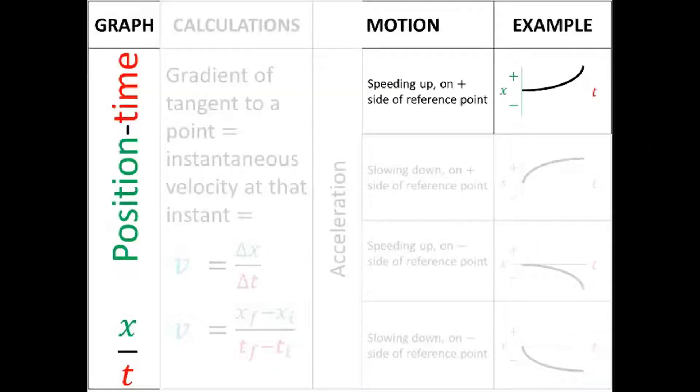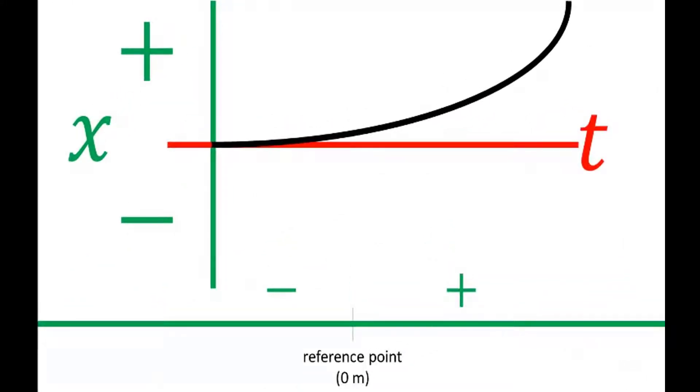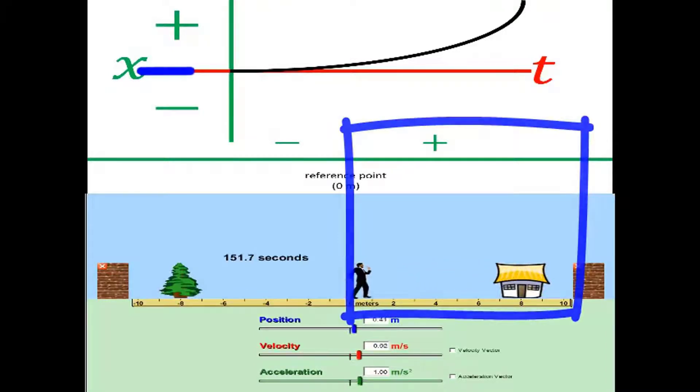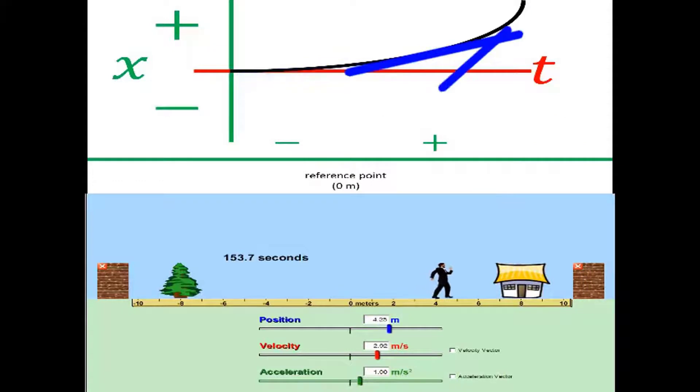So let's take the first example where the object is only on the right-hand side of the reference. Its position is always positive. We can see that the gradient starts shallow and becomes steeper and steeper. The gradient means velocity. So this tells us it starts slow and it goes faster and faster. So it's speeding up all the time on the positive side of the reference point. So let's look at an example. Watch how the man is always to the right of the zero point. He starts slowly and he gets faster and faster.